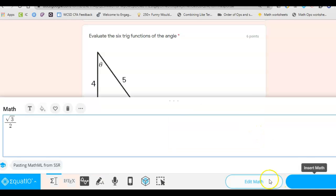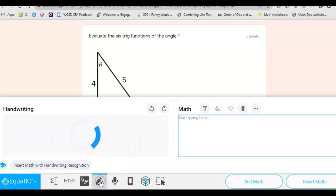If it's not correct, you can hit edit math. You can delete it. If it's not correct, you can go back to that handwriting recognition and start over again.